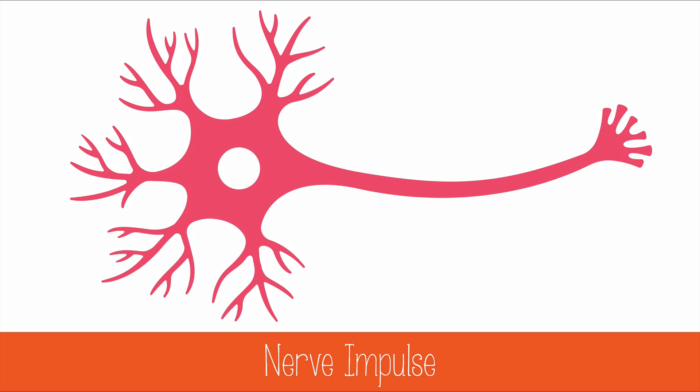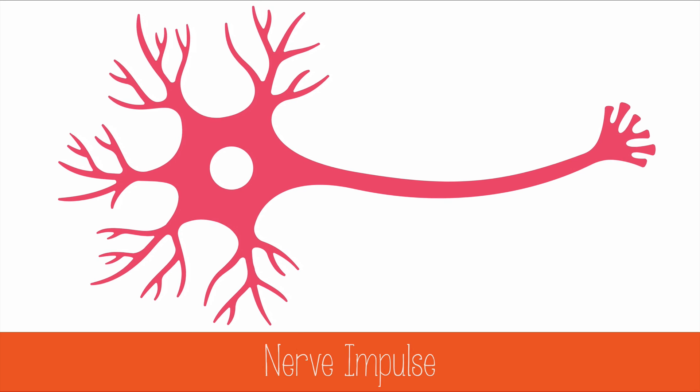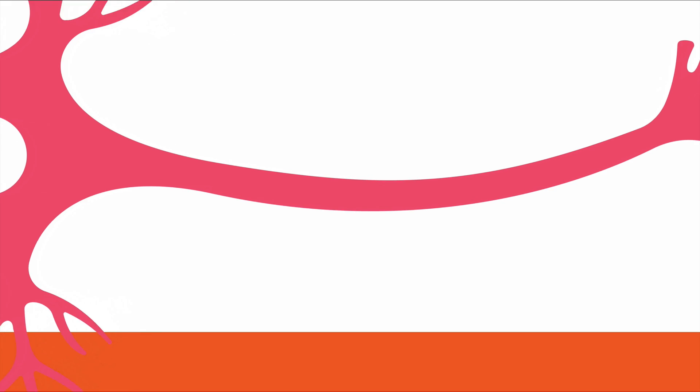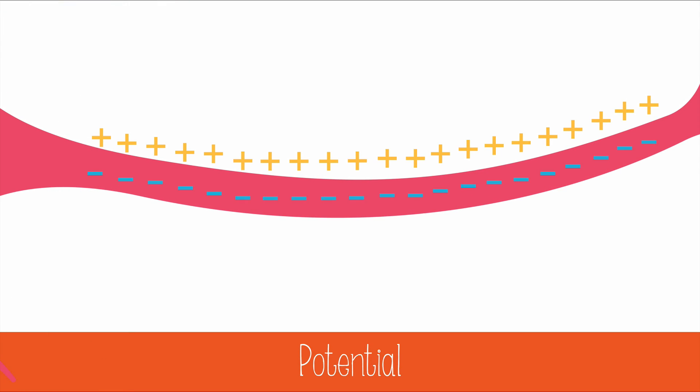I've said before that a nerve impulse is an electrical signal that travels along the neuron, but it's not quite electricity as you may know it. Electricity is the flow of electrons, but in a nerve impulse we use the word potential to describe the movement of charged particles across the membrane of a cell.